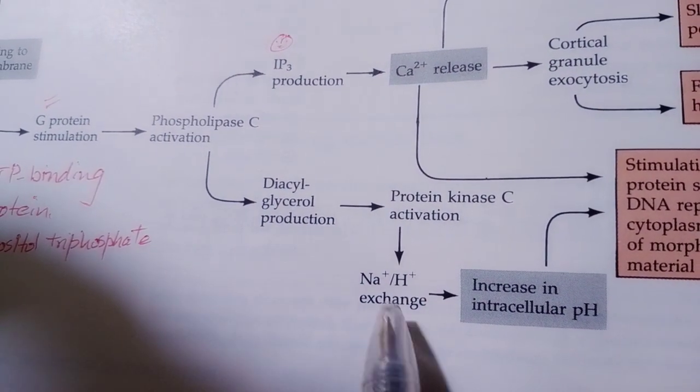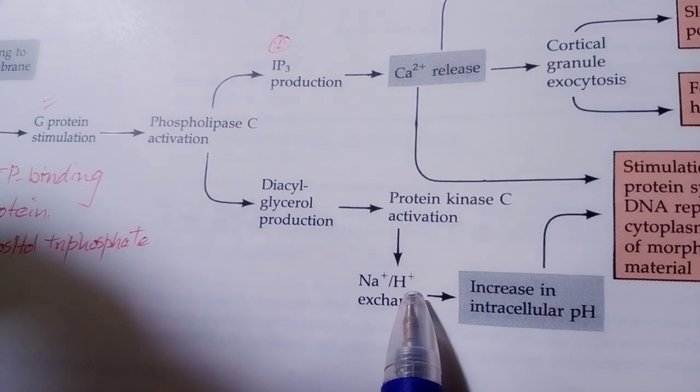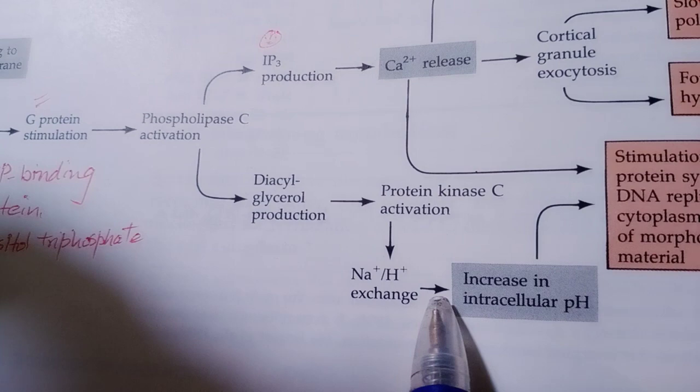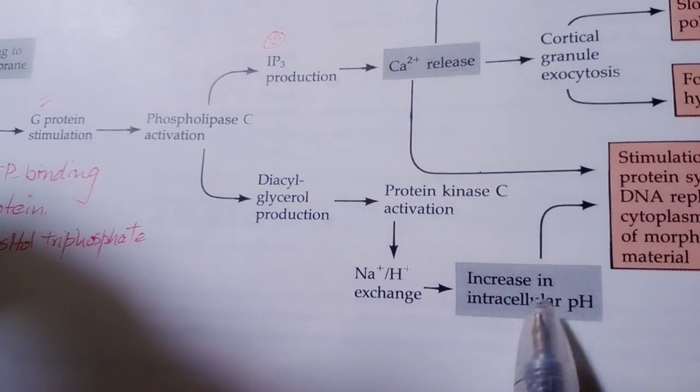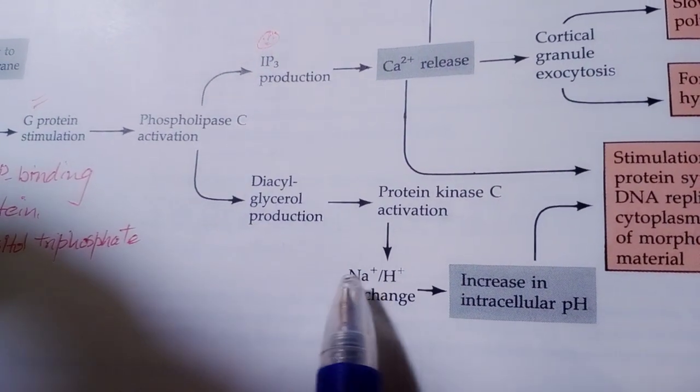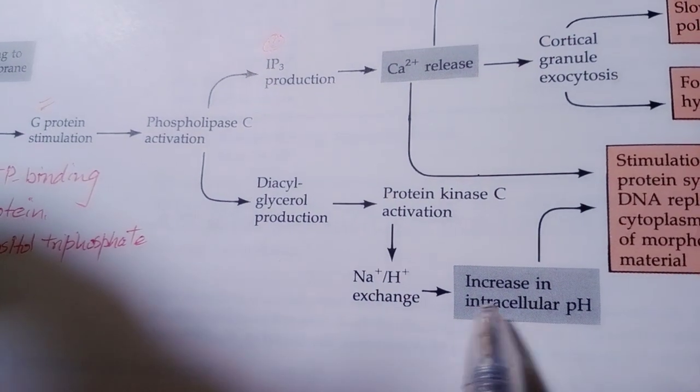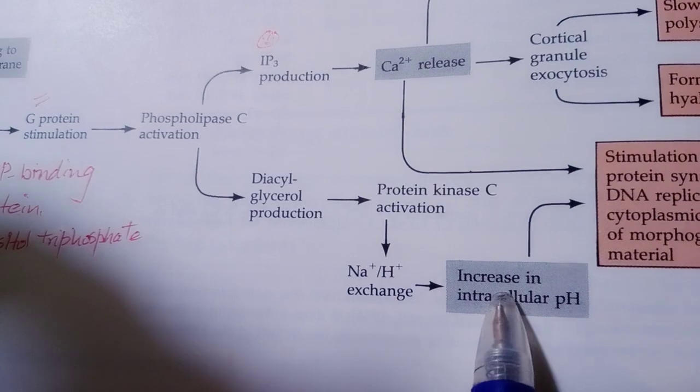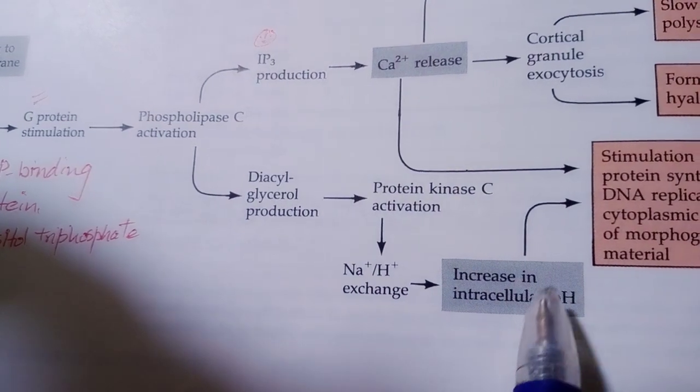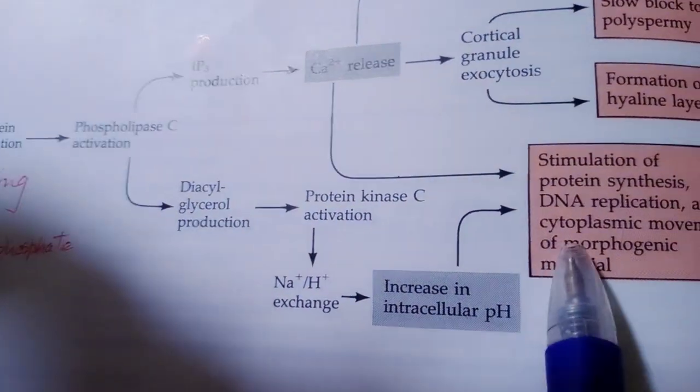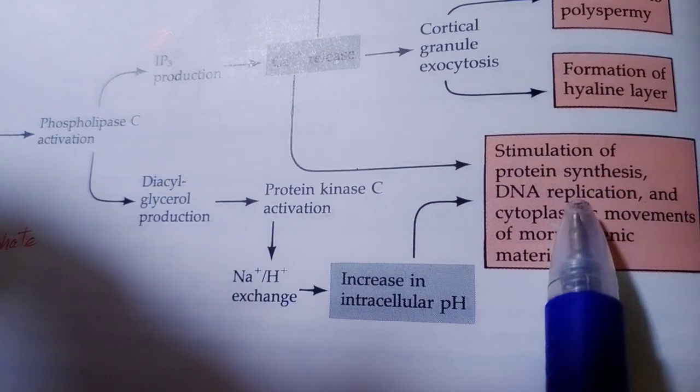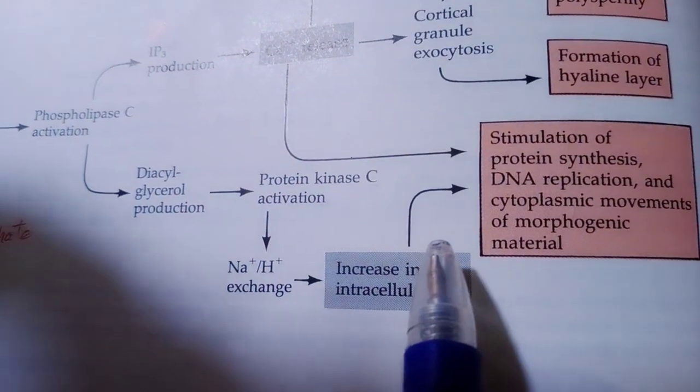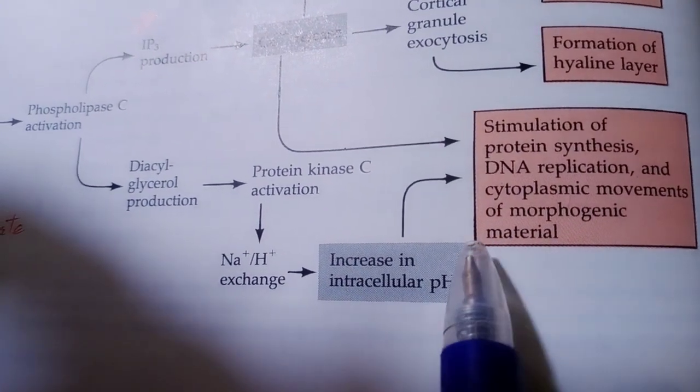This exchange of sodium and hydrogen ions increases intracellular pH. As intracellular pH is increased, it again stimulates protein synthesis, DNA replication, and cytoplasmic movements of morphogenic materials.